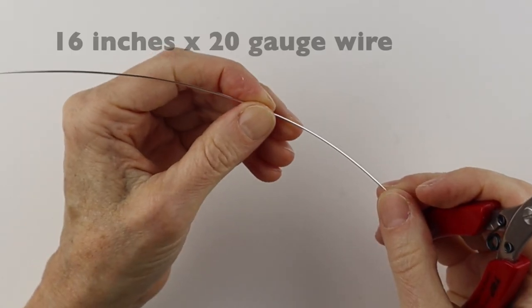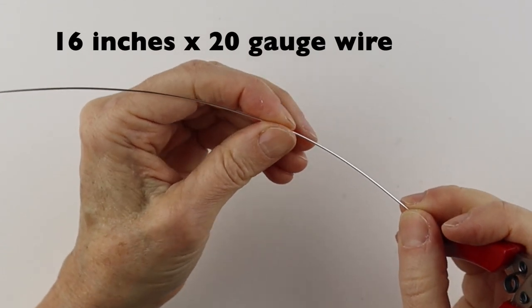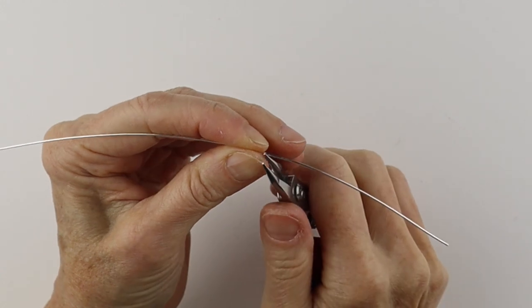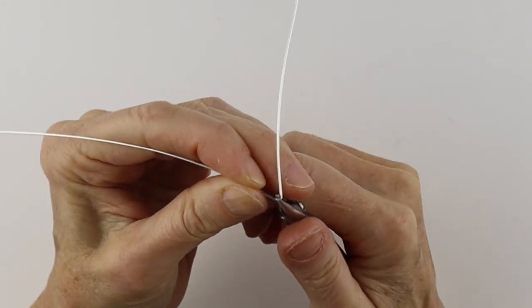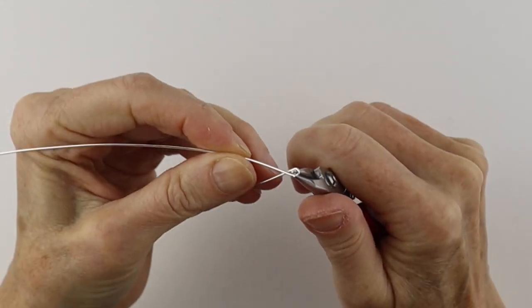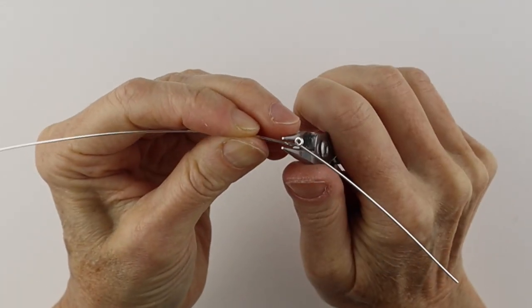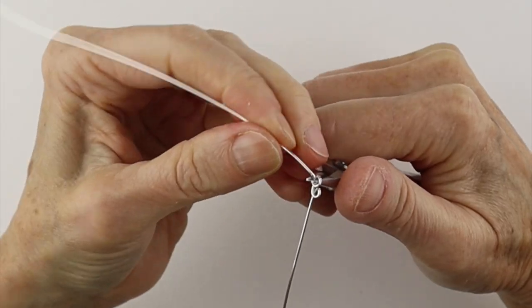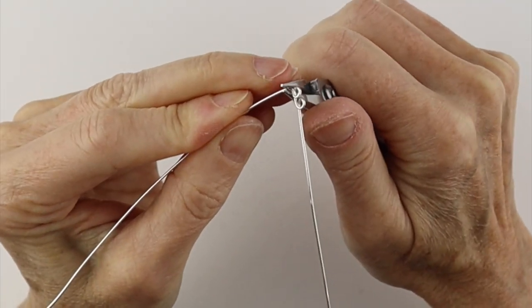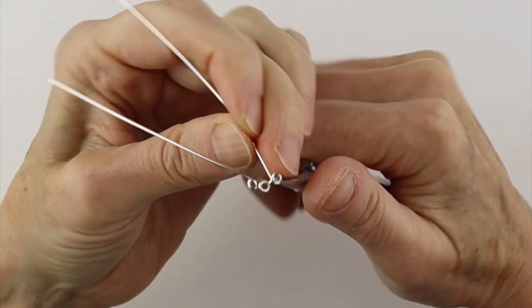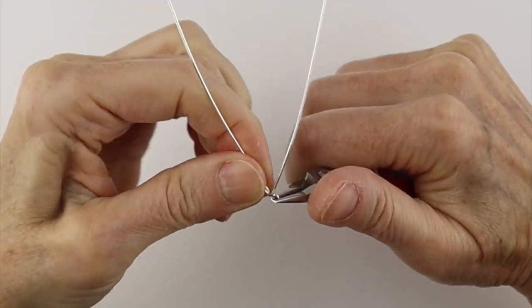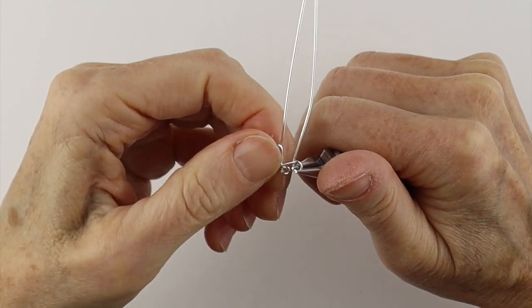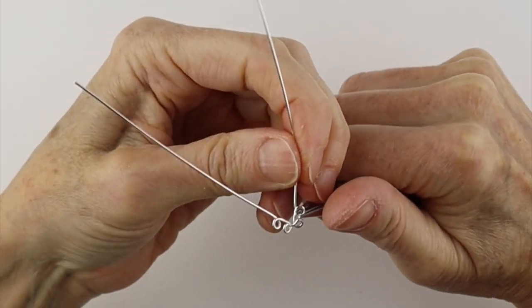For the multiple paw prints we're going to take about 16 inches of wire and then about three inches from the end I'm just going to start the toes. So we're just going to do two of them to one side, bring this down, and then do two to the other side. Try to make them about the same size but it's okay if they're not perfect.